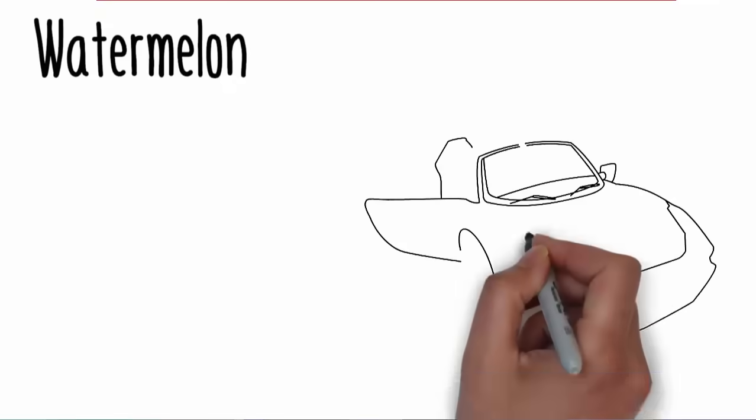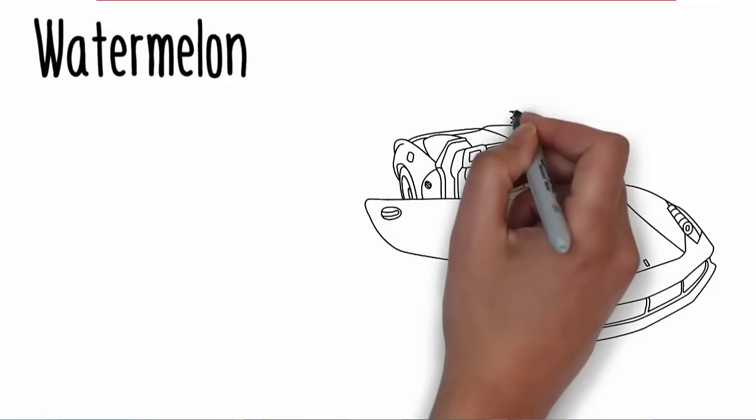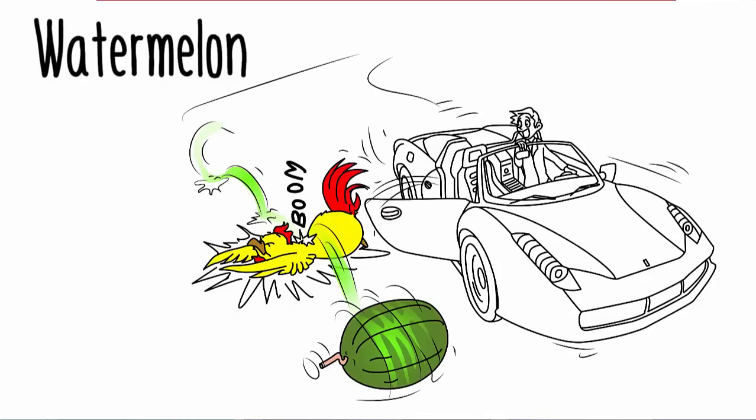Watermelon. The chicken opens the car door and leaps out onto the road. As it stands there, an enormous green watermelon rolls over the top of it and keeps rolling down the road.